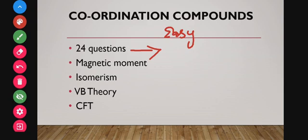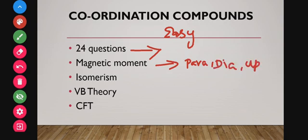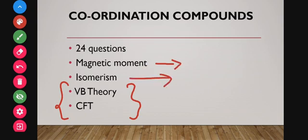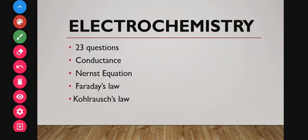If you have already learned D and F block elements, coordination compounds will be easier, since the same magnetic moment concepts — paramagnetic, diamagnetic, and number of unpaired electrons — apply here too. You also need to learn the various types of isomerism, how they are formed, and how many isomers can be formed from a given compound. Valence bond theory and crystal field theory are also important in coordination compounds.